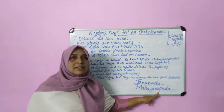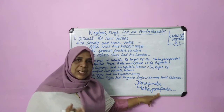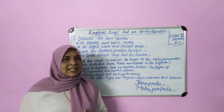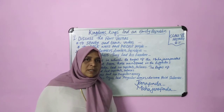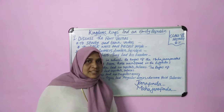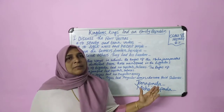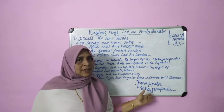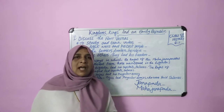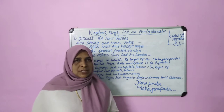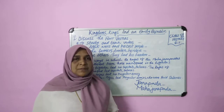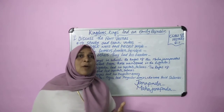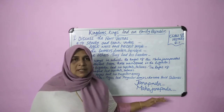Some janapadas were more important, powerful and precious than others; these were called mahajanapadas. Today we have elections conducted by the election commission, but in the time of mahajanapadas there were no election commissions. Janapadas means kingdom, and mahajanapadas were the more powerful kingdoms.